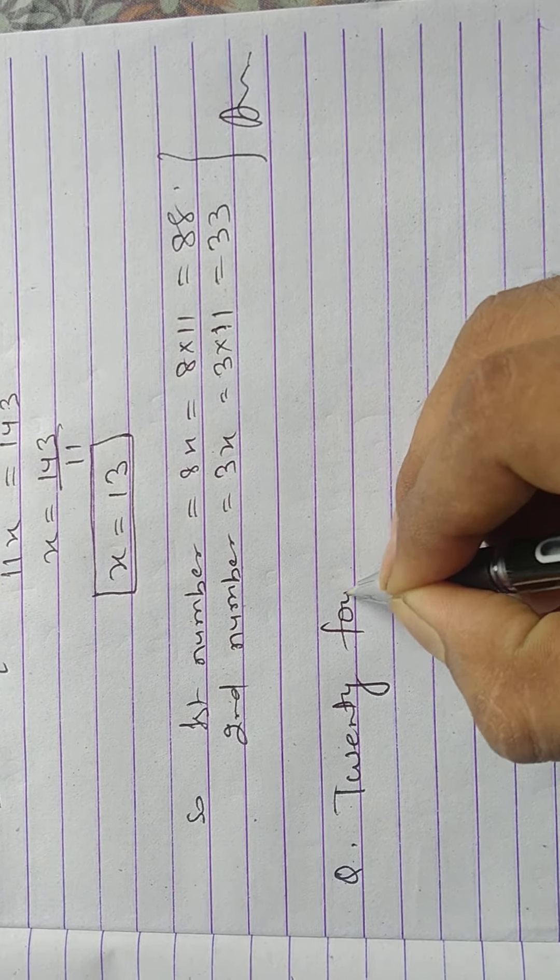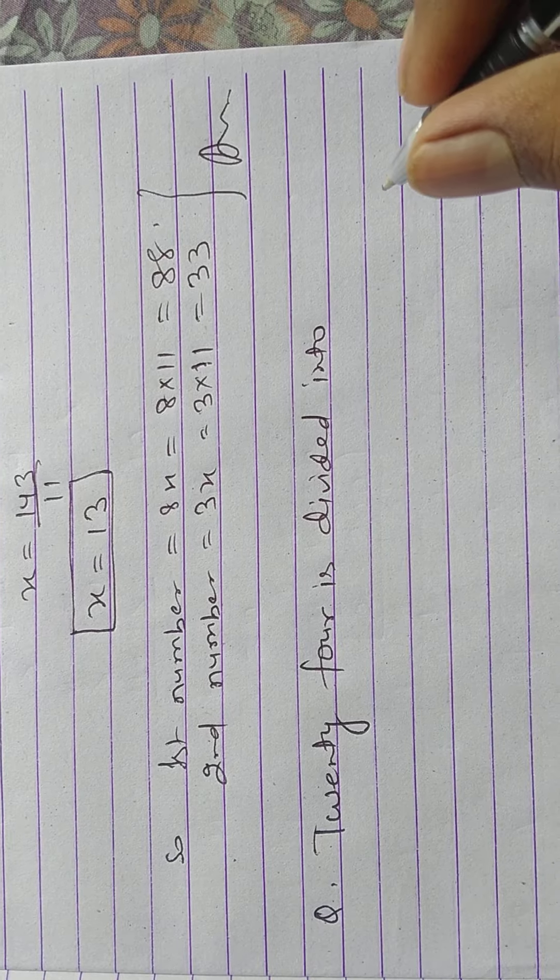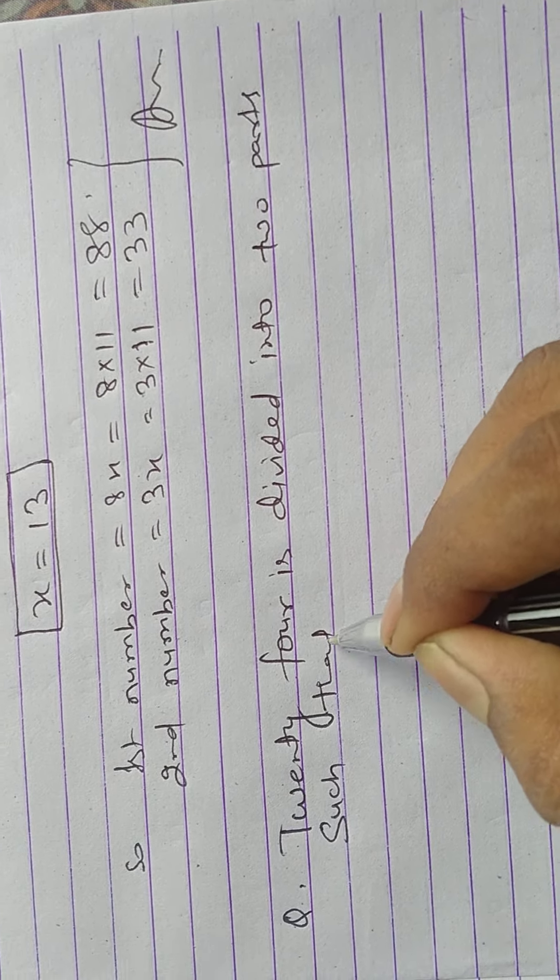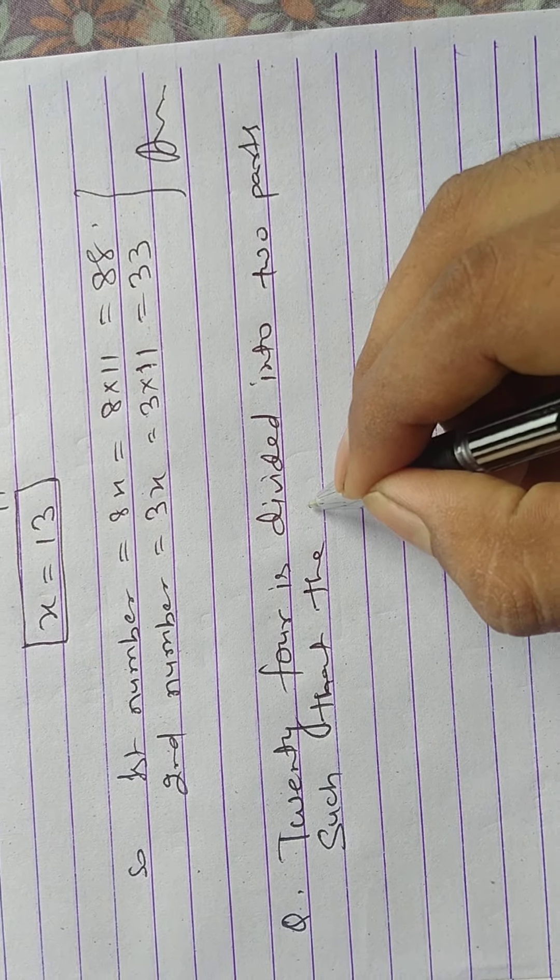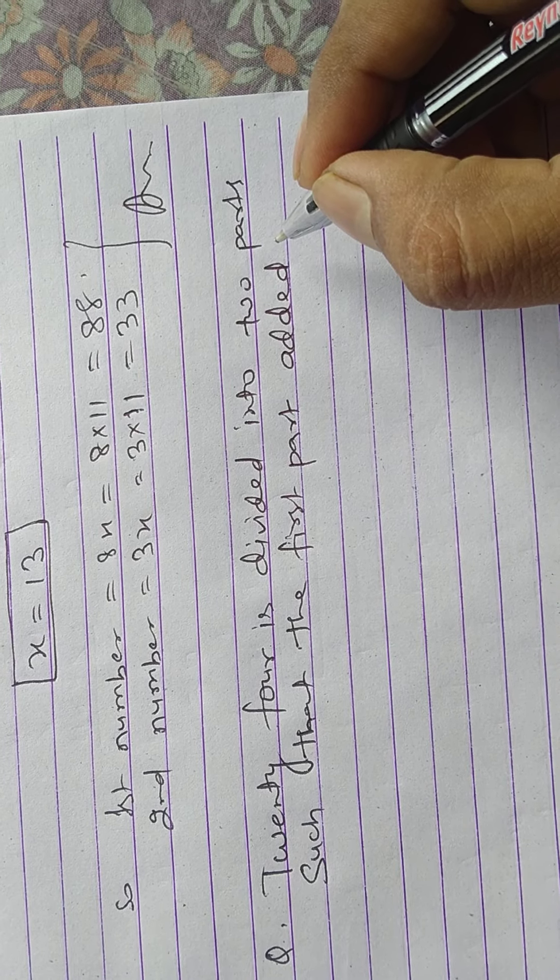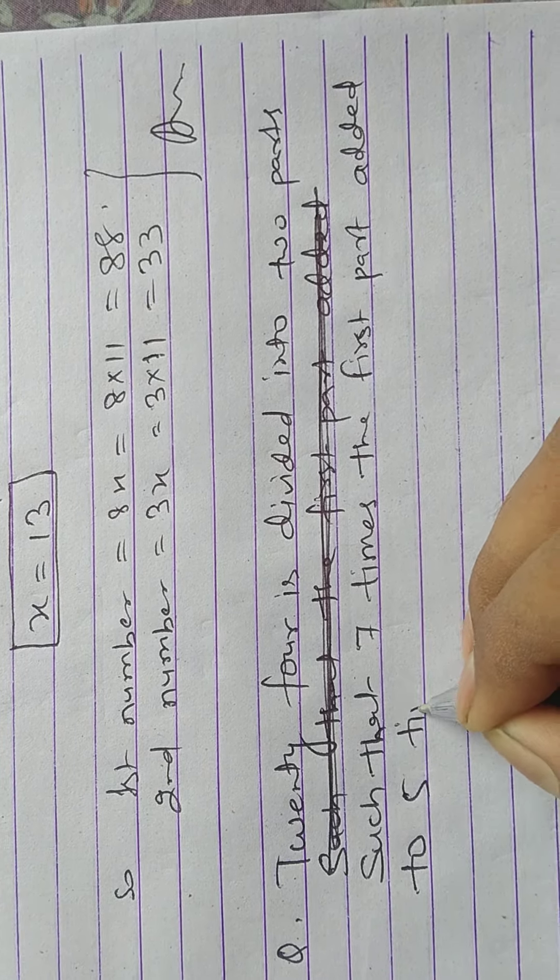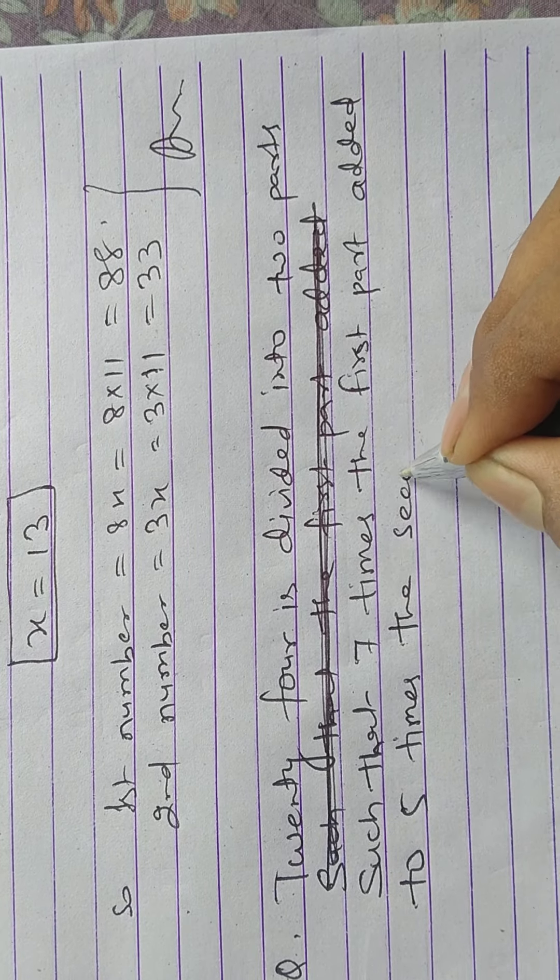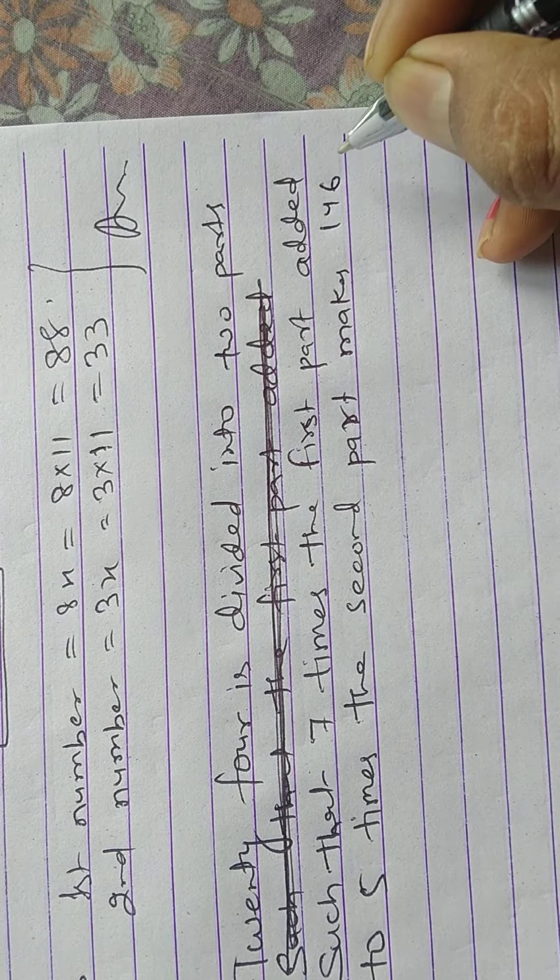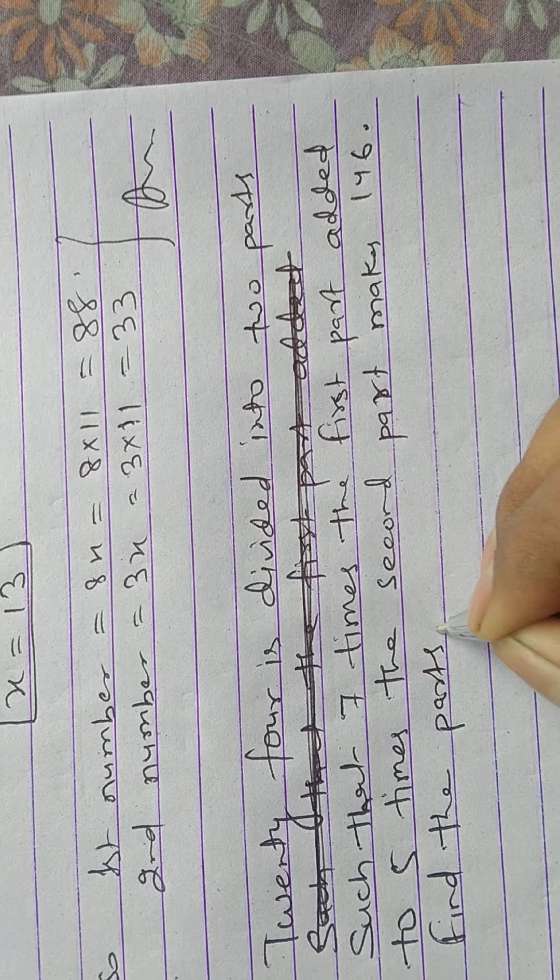First we write the question: 24 is divided into 2 parts. 7 times the first part added to 5 times the second part makes 146. Find the parts.